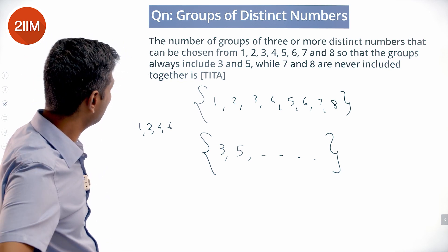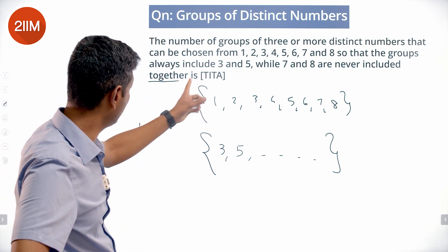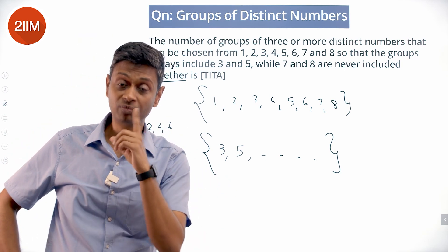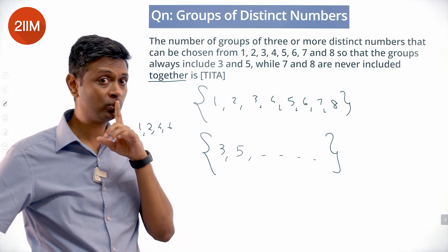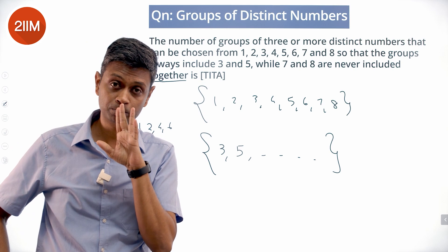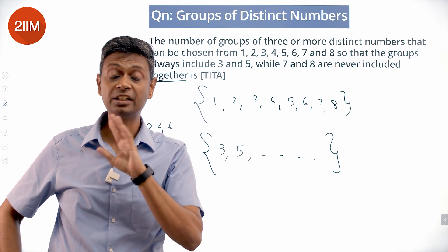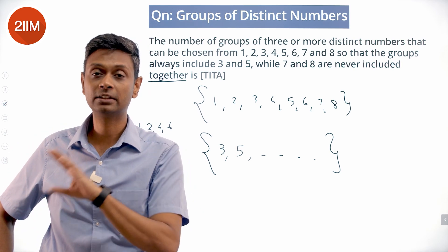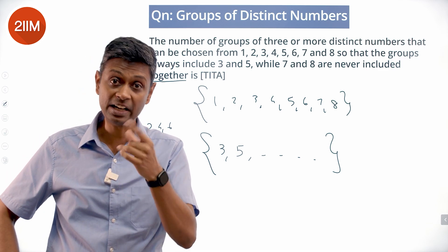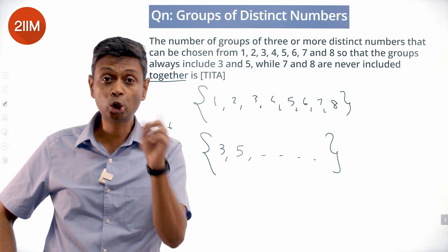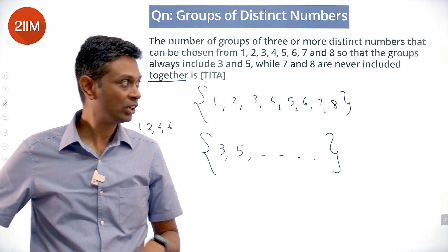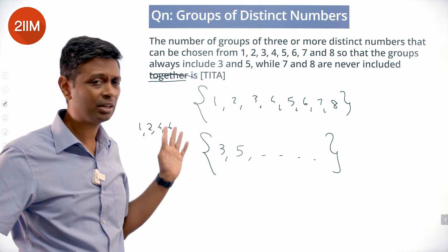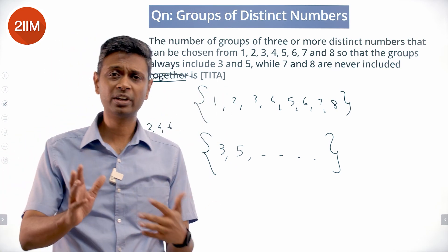It's very interesting — seven and eight are never included together. That means I could have one, two, four, seven; or two, four, six, eight. I cannot have four, five, six, seven, eight together. Seven alone could be there, eight alone could be there — only seven and eight together cannot be there. Seven and eight are never included together, so think about one, two, four, six and figure out the combinations.